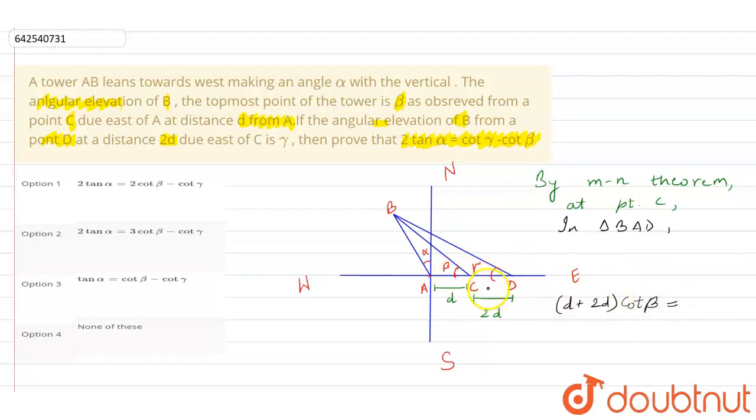Is equals to, this distance D cot of this angle cot gamma, D cot gamma minus this distance CD, that is 2D cot. And what is this angle, this angle will be 90 plus alpha, so this will be 90 plus alpha.